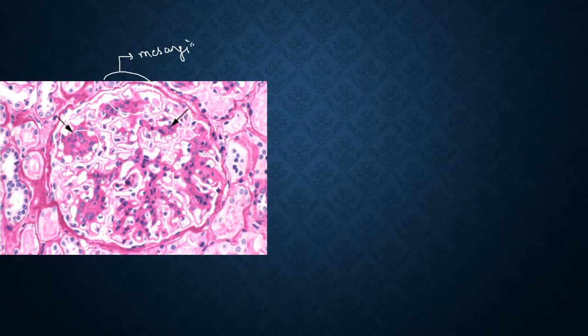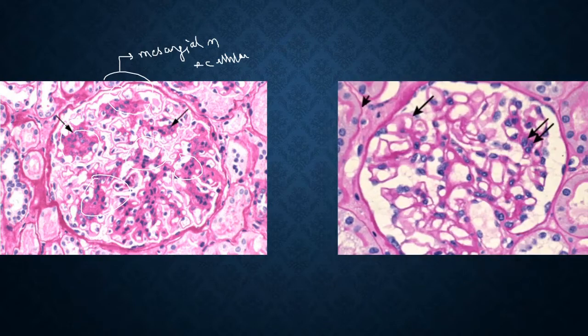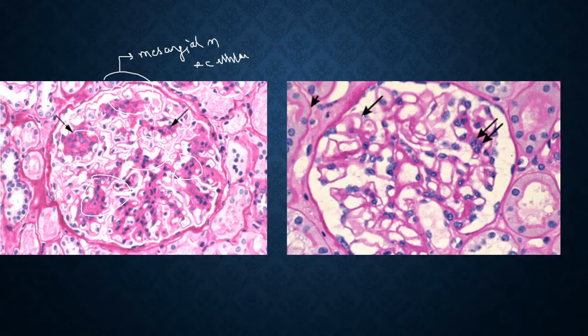We can see there are segmental mesangial matrix and cellular expansion in this glomerulus. There are more than three cells in a particular mesangial duct area.